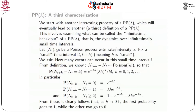Now fix a small time interval t to t+h, where h is small, so the length of the interval is very small. The number of events or arrivals during this interval t to t+h is given by N(t+h) minus N(t), and that is a Poisson random variable with parameter lambda*h. So it can take any value k with probability e^{-lambda*h} * (lambda*h)^k / k! for all k. Theoretically, there is a positive probability of any number of arrivals in this short time interval.